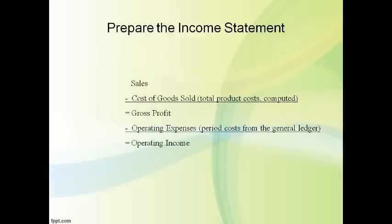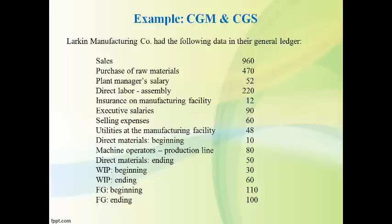Cost of goods sold is subtracted from sales on the income statement to get gross profit. Period costs are reported as operating expenses. Next, we will quickly walk through an example of computing cost of goods manufactured and cost of goods sold.